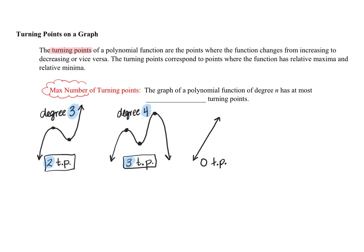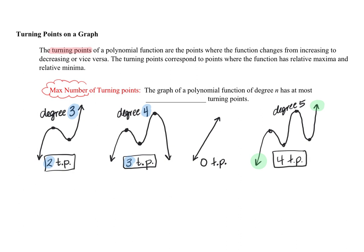If we try to graph a polynomial with four turning points — increasing, then decreasing, then increasing, then decreasing, then increasing again — that gives us four turning points. Notice what happened to the end behavior: now the left side is falling and the right side is rising. So this is no longer a degree 4 polynomial; this would have to be an odd degree polynomial, possibly degree 5, and it has four turning points. This follows what we said earlier: the number of turning points is one less than the degree. So the graph of a polynomial of degree n has at most n minus one turning points.